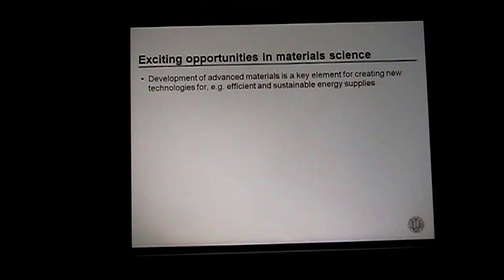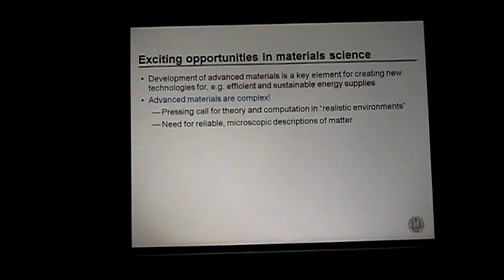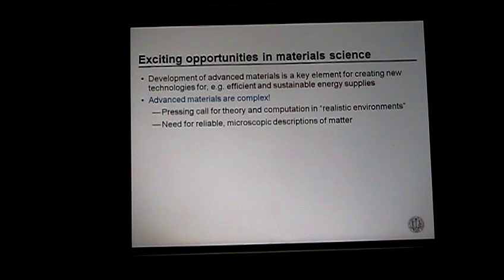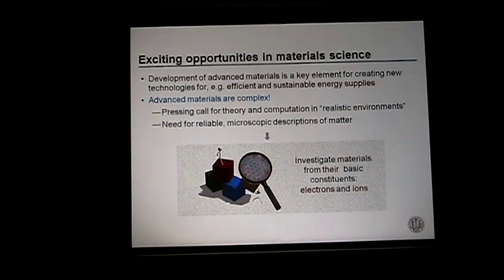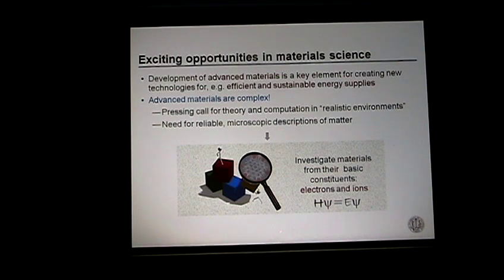The energy problem represents very exciting opportunities for us to look at materials that are extremely complex. Although the nano business and the search for materials for energy applications has been driven by experiment, as experiment becomes more complicated and sophisticated, we do need theory and computation to understand materials. We need reliable microscopic description of matter—not only models that just fit the experiment, but really microscopic understanding that can lead to prediction. One way to do this is to start from the beginning and investigate material from the basic constituents, like electronic structure, and as much as you can, start from the beginning and solve the equations.